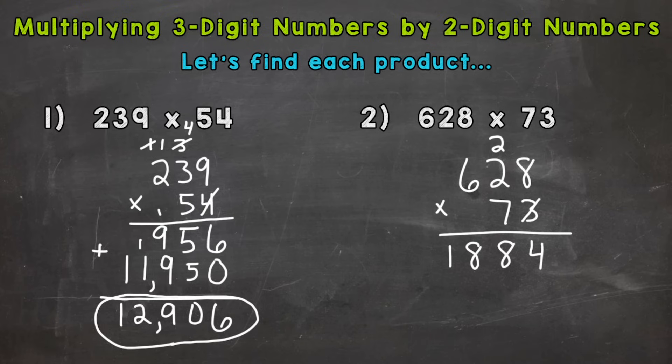We are done with this 3 and then also that 2 that we carried. So we need a zero here for our next step because that 7 has a value of 70. We're moving over to the tens place. So now we do 7 times 8, which is 56, carry our 5. 7 times 2 is 14, plus 5 is 19. 7 times 6 is 42, plus 1 is 43.